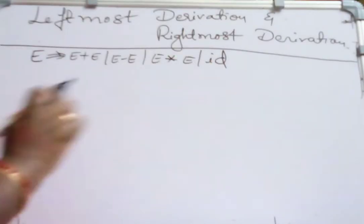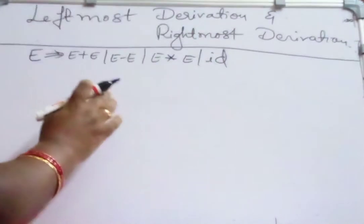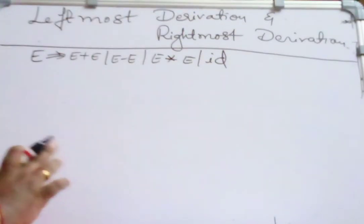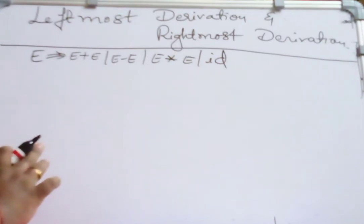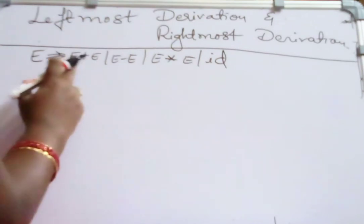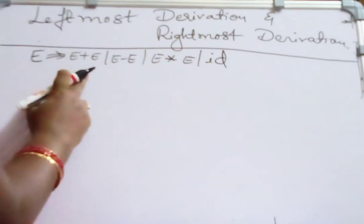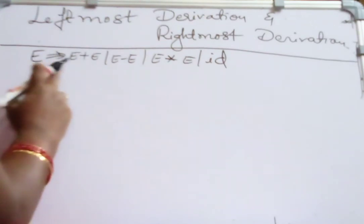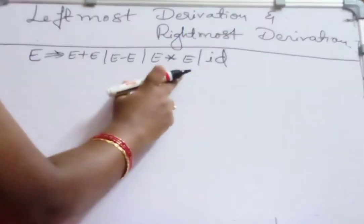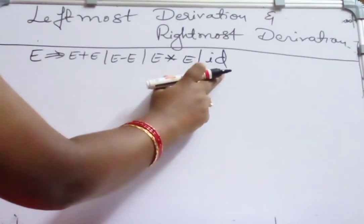Leftmost derivation means in the derivation process, if a leftmost variable is replaced at every step, then the derivation is said to be leftmost. For example, consider this grammar: E derives E plus E, or E minus E, E star E, or ID.